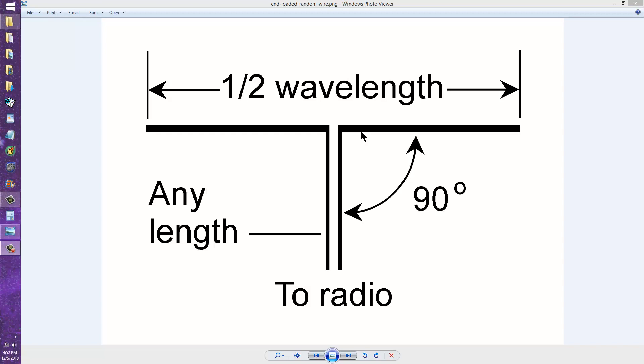But it's an end-loaded random wire that you can, more or less, you already have if you have a dipole antenna. Suppose you have a dipole antenna like this, and you want a random wire, but you don't have the energy or wherewithal or physical space or desire to go ahead and bother with it.